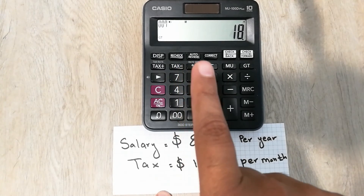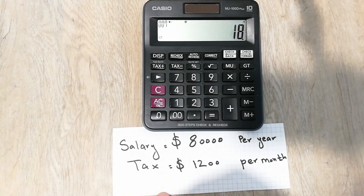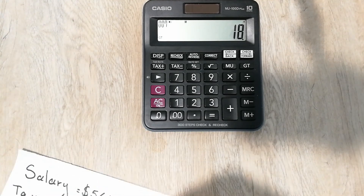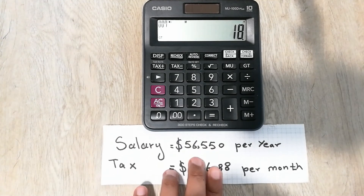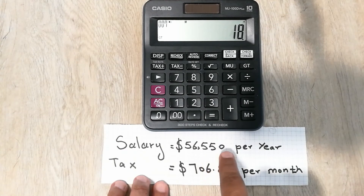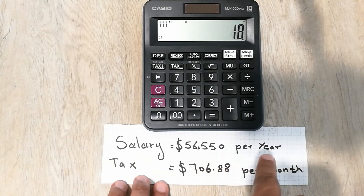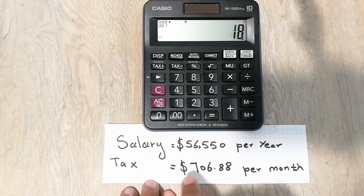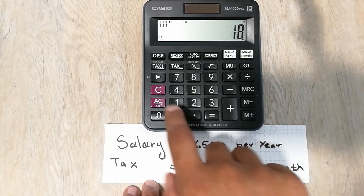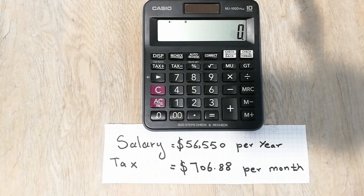Now let's move to one more example. This time your salary is fifty-six thousand five hundred and fifty per year, and you are paying a tax of seven hundred and six point eight eight per month. So how can you find out the tax rate in this case?